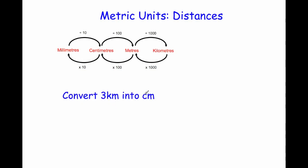Our last question is to convert 3 kilometers into centimeters. This is a two-step question. First, we change from kilometers into meters by timesing by 1000, giving us 3,000 meters. Then we change from meters into centimeters by timesing by 100, giving us 300,000 centimeters.